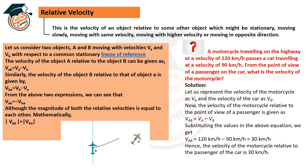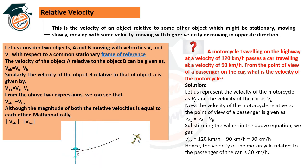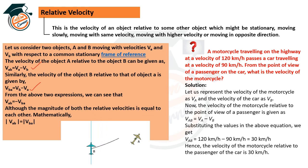Relative velocity is the velocity of an object relative to another object, which might be stationary, moving slowly, moving with the same velocity, moving with higher velocity, or moving in the opposite direction — all within one frame of reference. For two objects A and B moving with velocities vA and vB relative to a stationary frame: velocity of A with respect to B is vA − vB, and velocity of B with respect to A is vB − vA. The magnitudes are equal: |vAB| = |vBA|.